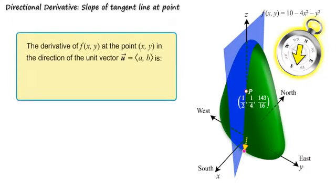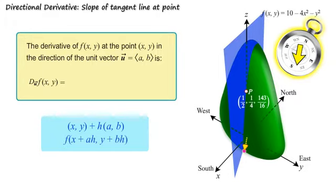We are ready to define the directional derivative. We use a capital D to represent the directional derivative with a subscript vector u to emphasize that it depends on the unit vector. As with the ordinary derivative, a directional derivative is defined using a limit. First we think of a second point obtained by moving out a little bit from the original point, now in the direction of vector u. We use the function evaluated at this point and now can compute the slope of the line through the two points. Now we use the limit, imagining the second point moving closer to the original point as h goes to zero.